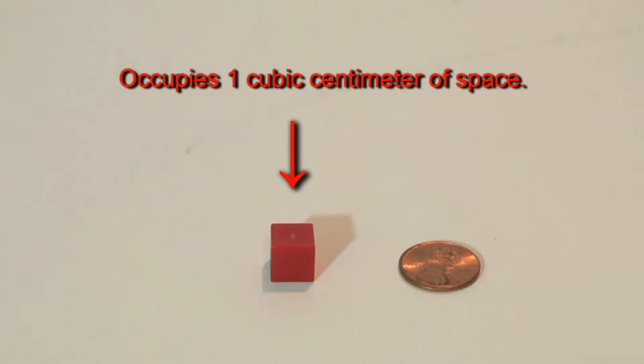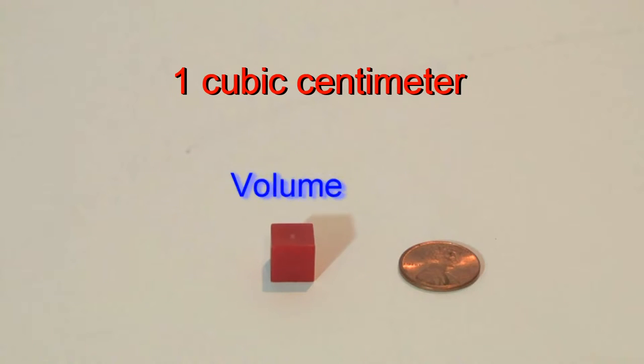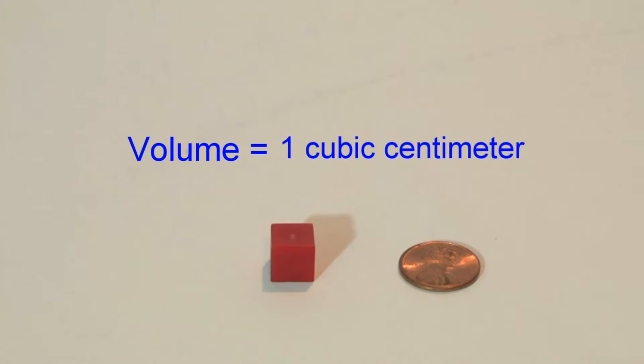And when we're talking about space, we're talking about volume. So the volume of this red cube is equal to one cubic centimeter of space.